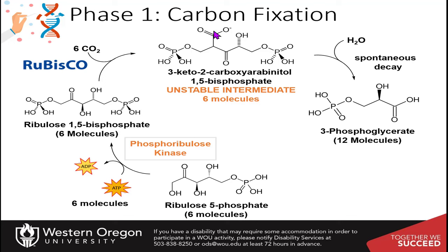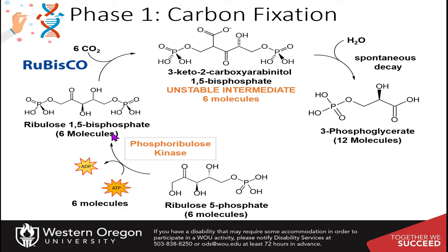That first phase is the carbon fixation phase. This uses the Rubisco enzyme, which takes the ribulose 1,5-bisphosphate and combines it with carbon dioxide to make this unstable six-carbon intermediate. This is almost immediately decaying with the addition of water into two molecules of 3-phosphoglycerate. To make one glucose molecule, you need this to happen six times.